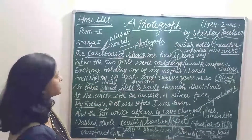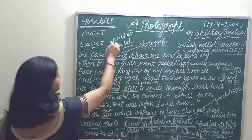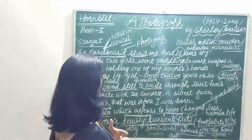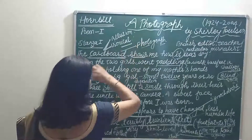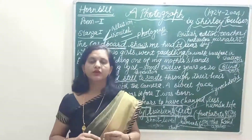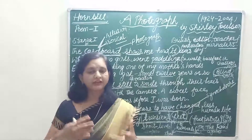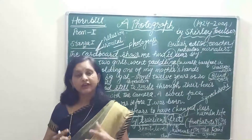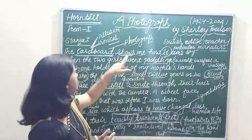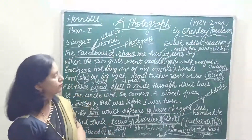Now let's discuss the poetic devices used in this poem. The first poetic device is allusion — allusion means an indirect reference to somebody, something, or any event. Here, 'cardboard' means photograph. The use of the word cardboard is interesting and ironical: interesting because the poet is using a photograph to convey her mother's emotions indirectly; ironical because in the photograph her mother is 12-13 years old but is no longer alive, yet the photograph still lives on. Through allusion, the lack of permanence of human life is shown.